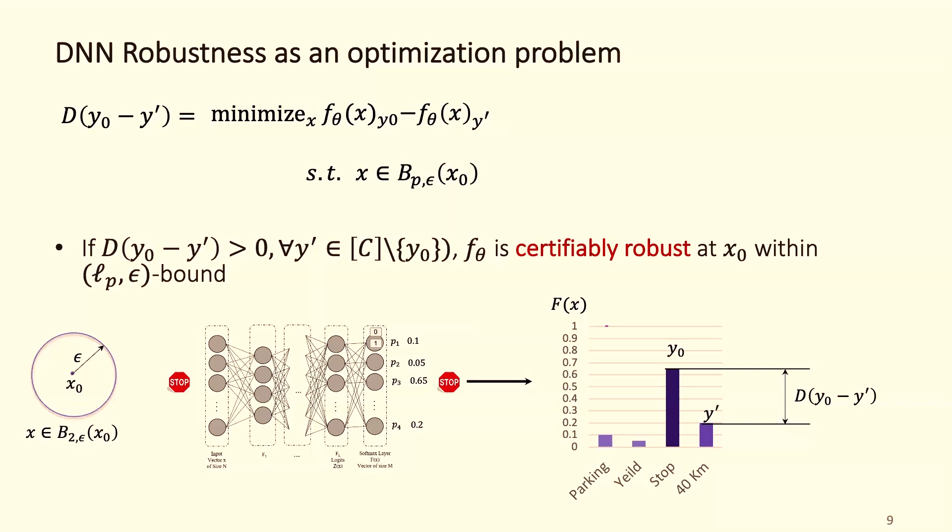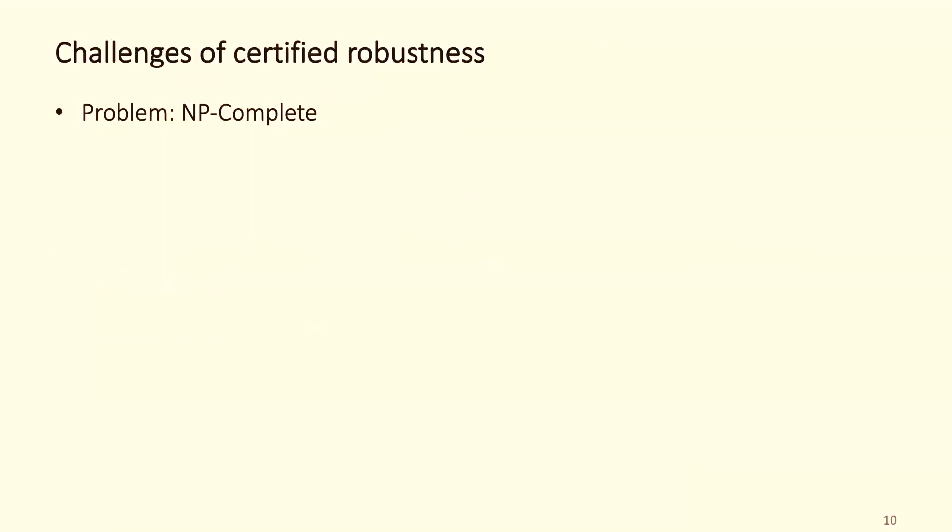It's very elegant, very nicely presented, but the problem here is that solving this optimization problem is NP-complete. As all optimization guides will do, they start relaxing this method. When you do relaxation, you deal with many other issues. The two main issues are the tightness challenge, which is when you relax you find a very loose bound. The bounds are very close to the actual y zero, which is not valuable that much. And also scalability, so it works for very small neural networks and not the large.